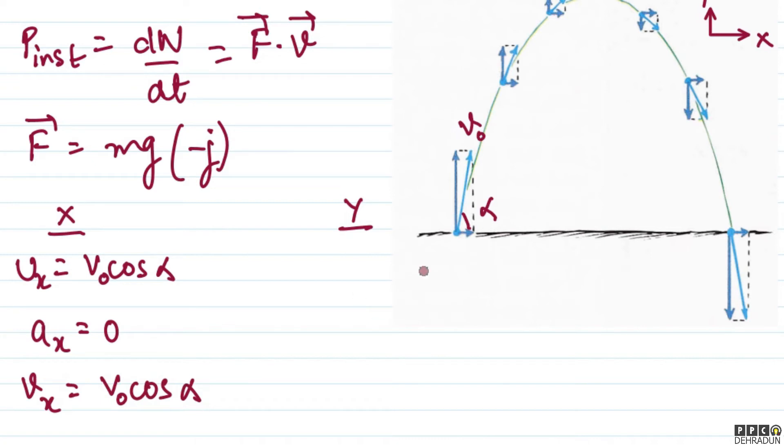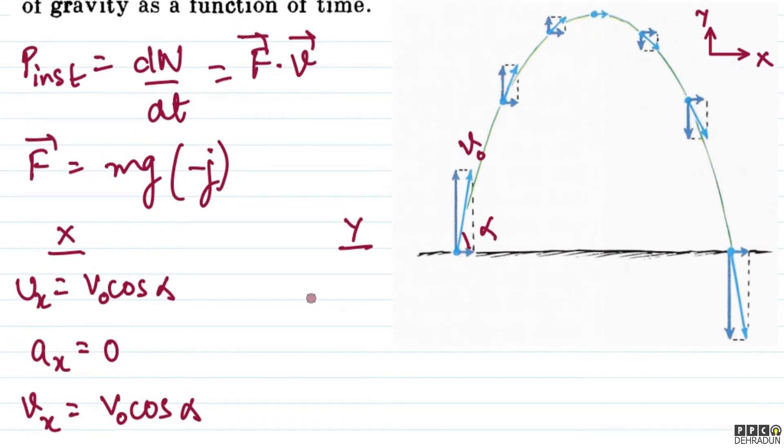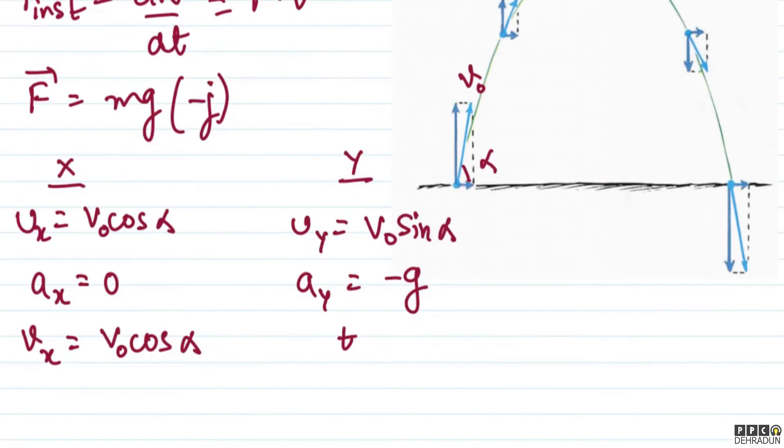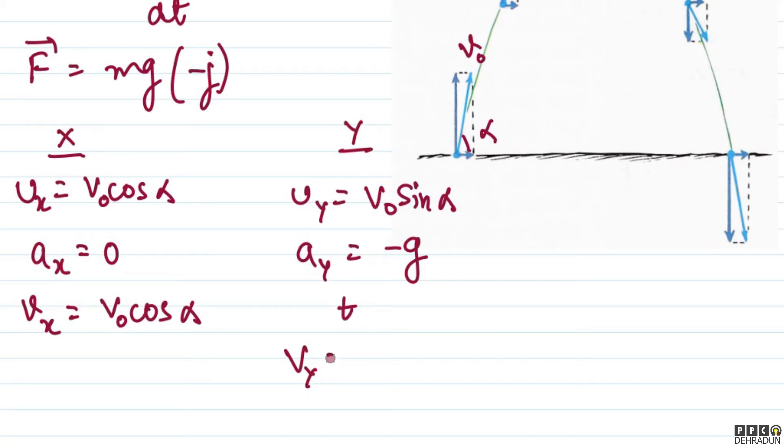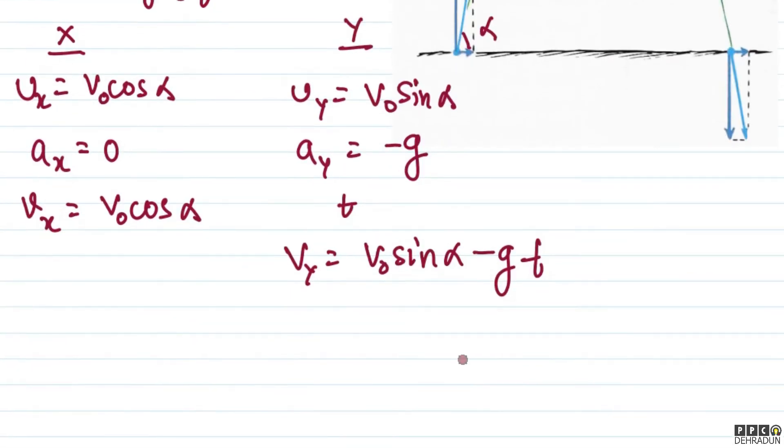Now if we come to the y-axis, I will write uy as v-naught sin alpha, the y component of initial velocity. For ay, I can write simply minus g, since I've taken downward direction as negative. So at any time t, I can write vy equals v-naught sin alpha minus gt. I'm using the v equals u plus at formula.